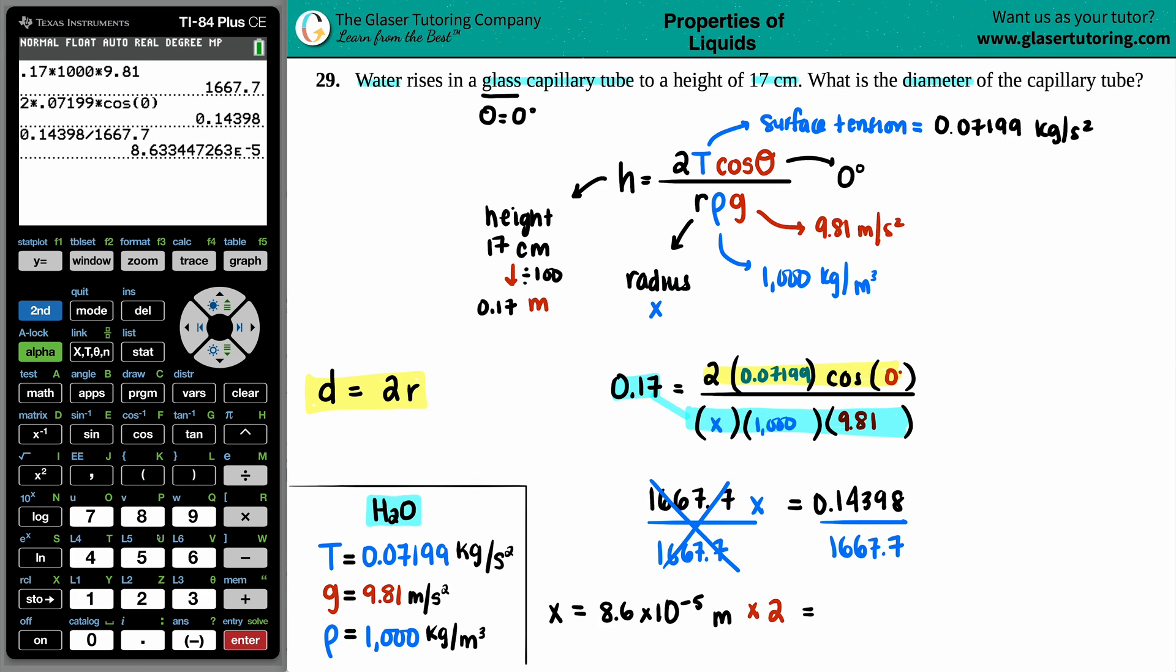So eight point six, the EE button, my favorite button, times ten to the negative fifth times two. And I get one point seven two times ten to the negative fourth. That's still in meters, and this is the diameter. Now if we just want to convert units, let's just say probably would be appropriate to put this in millimeters.